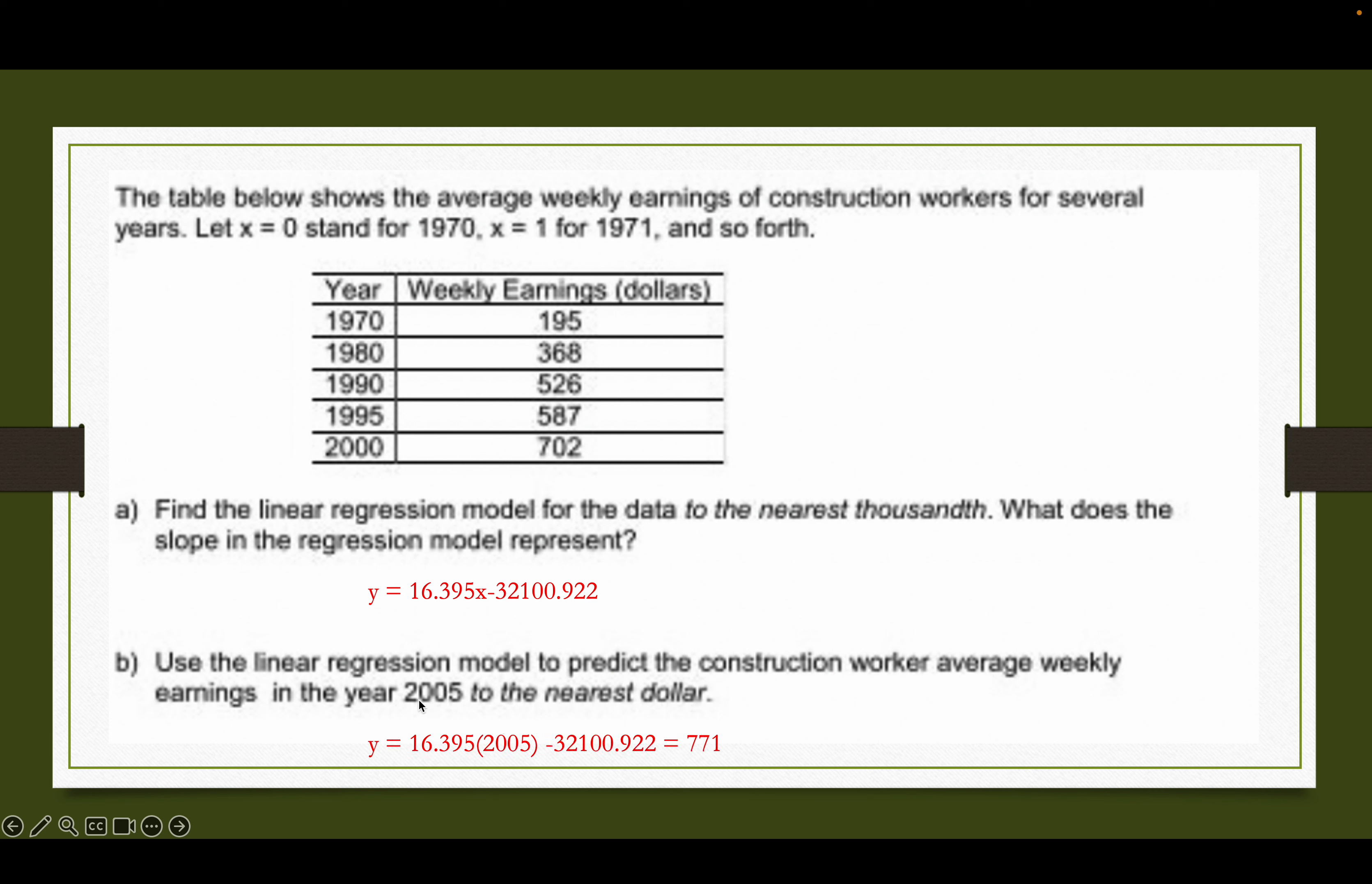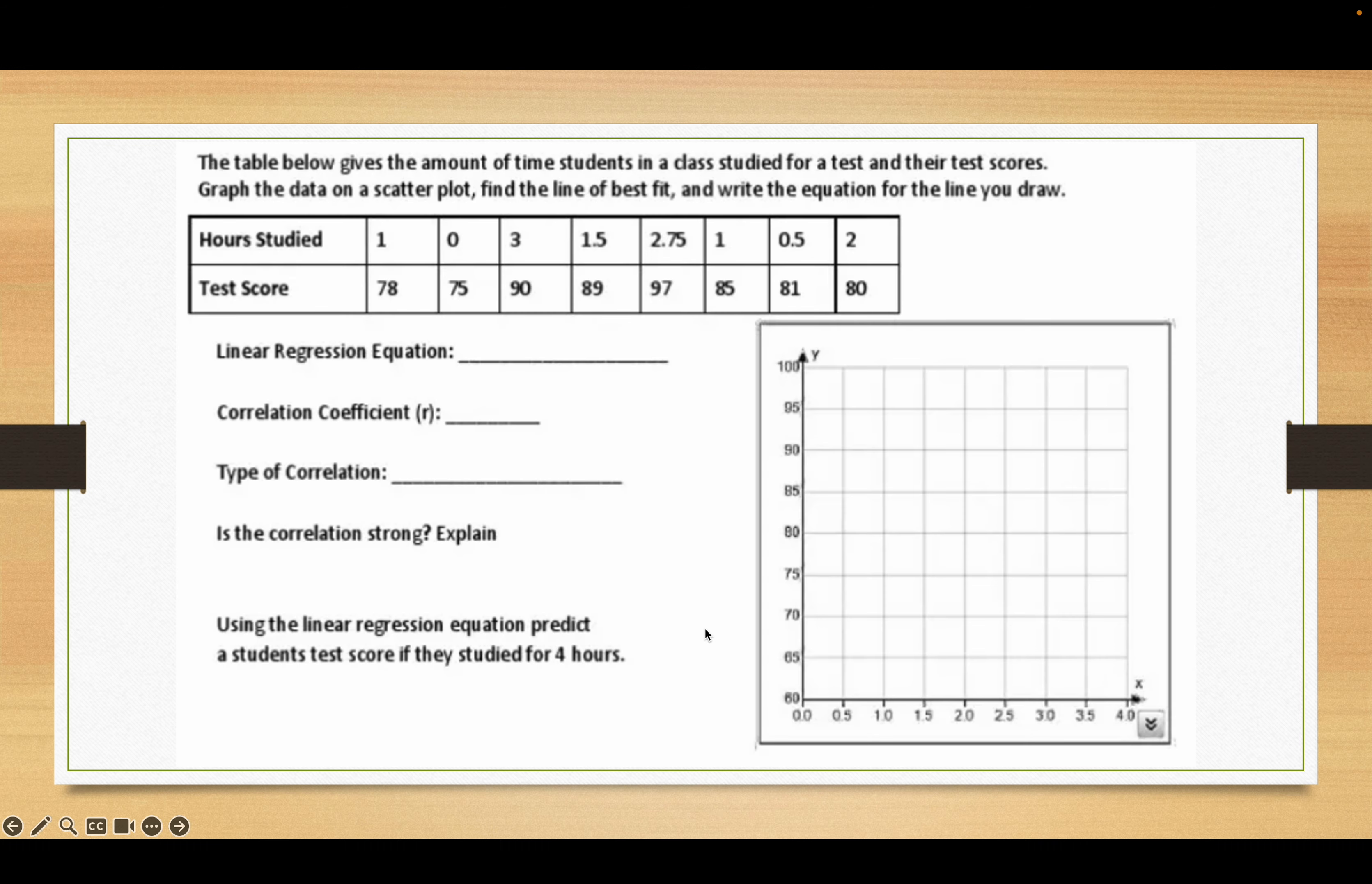Then we're going to plug in the year 2005 for x and I get 16.395 times 2005 minus 32,100.922. It comes out with 771 and that makes sense because 771 is a little bit higher than 700 and that's the next level up on the table.